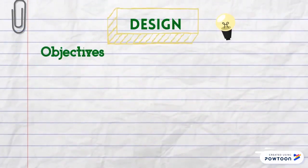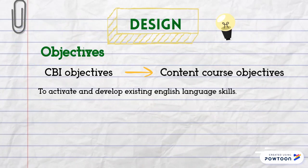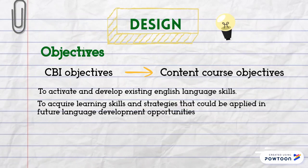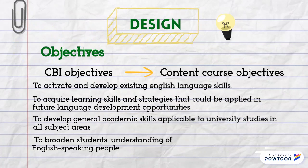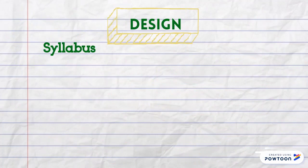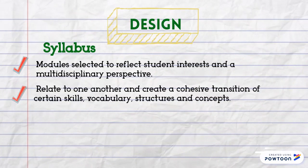The objectives in a content-based instruction course are the same objectives of the content course, and language learning objectives drive the selection of theme topics. Some of these objectives may be: to activate and develop existing English language skills; to acquire learning skills and strategies applicable to future language development; to develop general academic skills applicable to university studies in all subject areas; and to broaden students' understanding of English-speaking people. The syllabus consists of a sequence of modules selected to reflect student interests and a multidisciplinary perspective, designed so that they relate to one another and create a cohesive transition of skills, vocabulary, structures, and concepts.